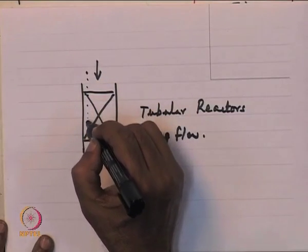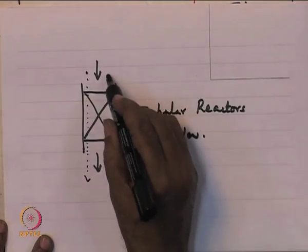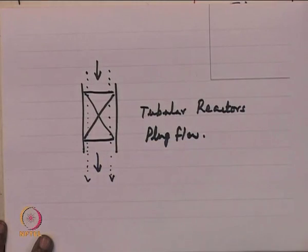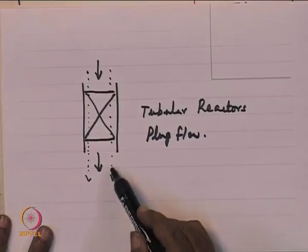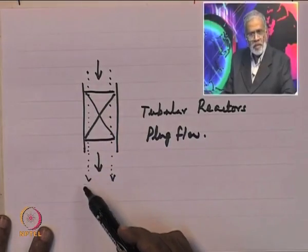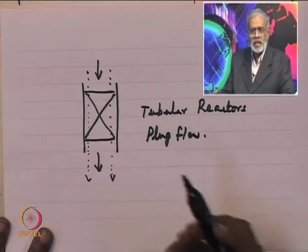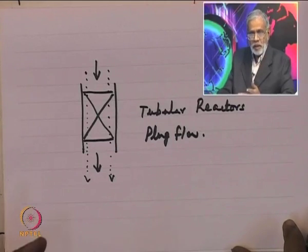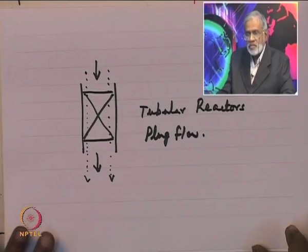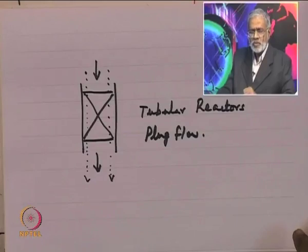We often talk about plug flow in tubular reactor design equations. By plug flow, we mean that a fluid element enters the equipment, moves through it, and emerges — without interacting with other fluid elements. This idealization means the residence time of fluid elements can be very precisely calculated, so we can tell how long they have spent in the equipment and thus the extent to which the reaction has taken place. Plug flow is an idealized version of tubular reactors, and we will set up equations to describe plug flow reactors.